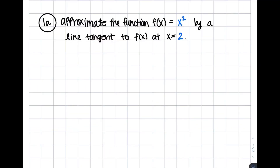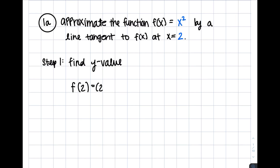For problem set 1, we're going to want to approximate the function f of x equals x squared by the line tangent to f of x at x equals 2. Step 1 will be to find the y value. The problem statement gives us that the x coordinate we'll be using is 2, so we'll use this to find our y value. To find the y value, we'll input the given x value into our function.